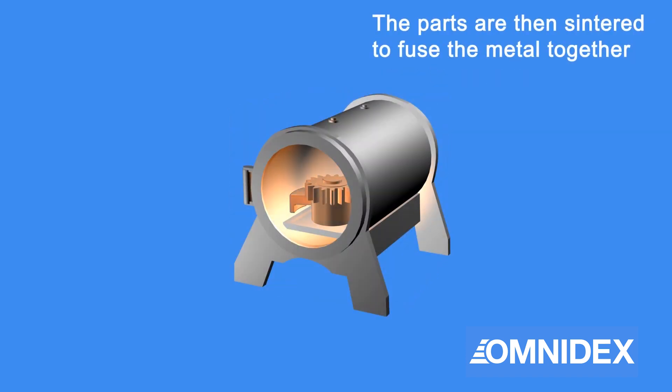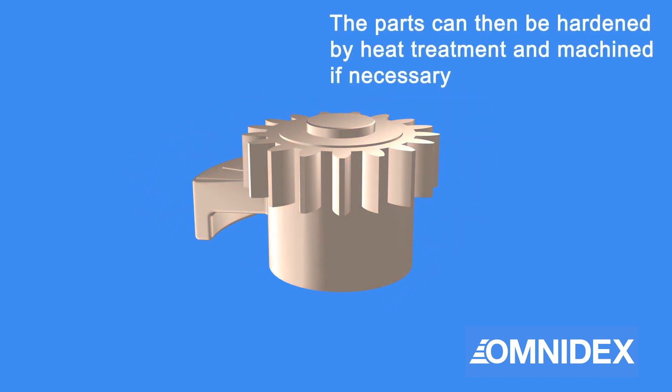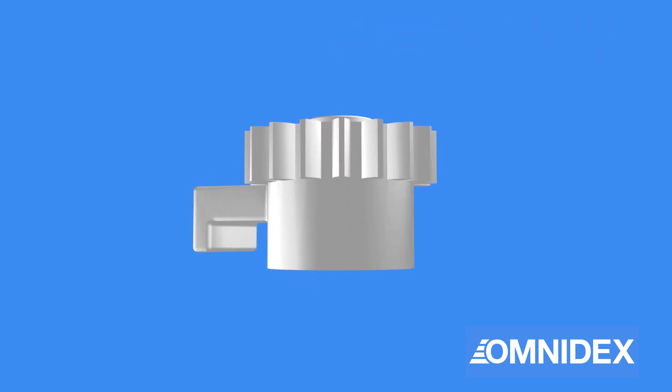The parts are then sintered to fuse the metal. The parts can be hardened by heat treatment or machined if necessary. After that, the finished parts are ready.